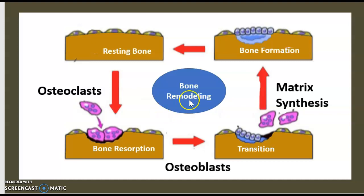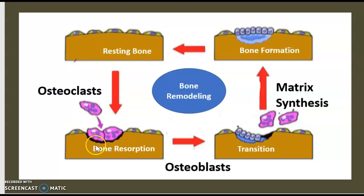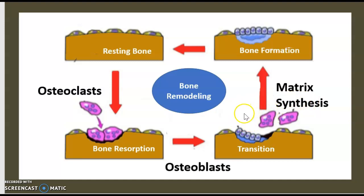Here's a quick reminder of bone remodeling. Starting from resting bone, we go to bone resorption, then transition, then bone formation, and back to resting bone. Between resting bone and bone resorption, it's the action of osteoclasts. Between bone resorption and transition, it's the action of osteoblasts. Between transition and bone formation, it involves matrix entities and the combined action of osteoclasts and osteoblasts.